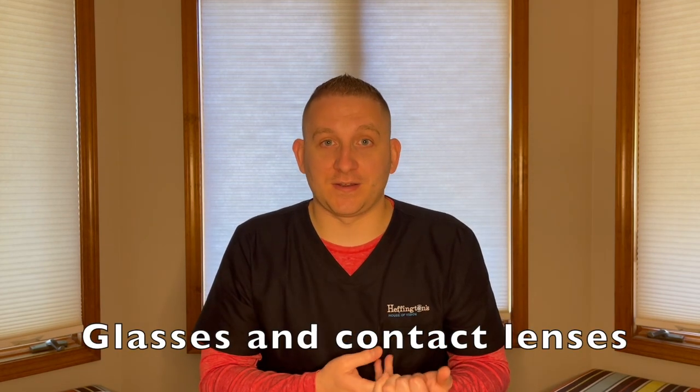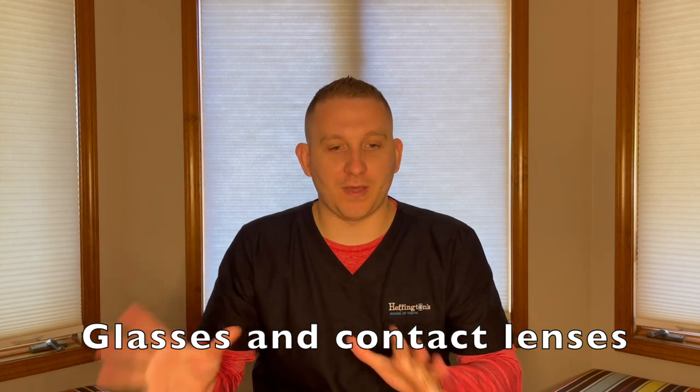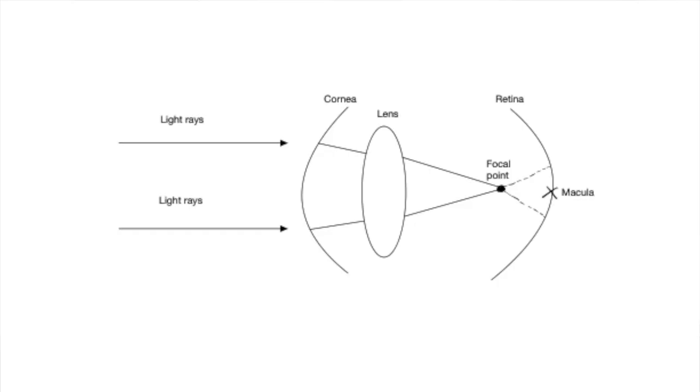Going back to the first two options — glasses and contact lenses — there are whole other categories like specialty contact lenses, gas permeable, and scleral contact lenses, which we'll cover later. For now, we're sticking to soft contact lenses. Whether you're wearing glasses about 13 millimeters in front of your eyeball or contact lenses right on the cornea, both adjust the position where the light rays land, moving that focal point back towards the retina.